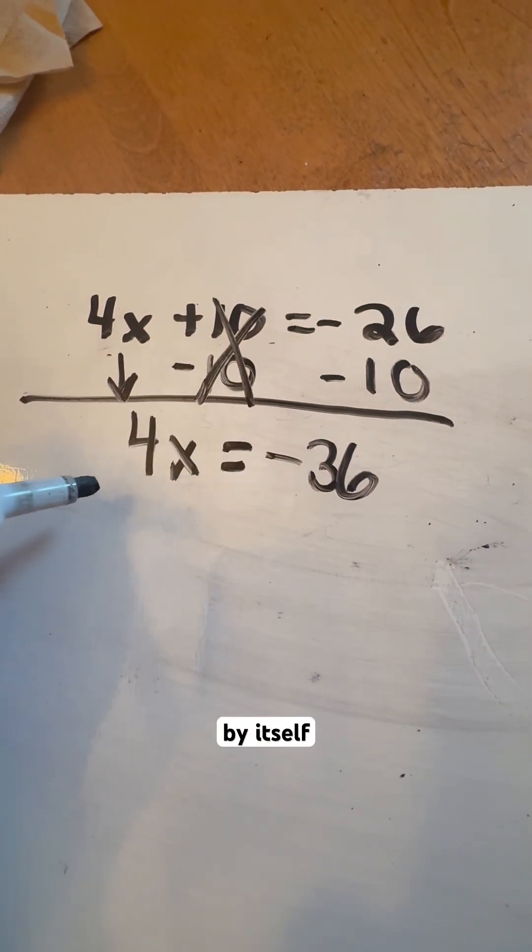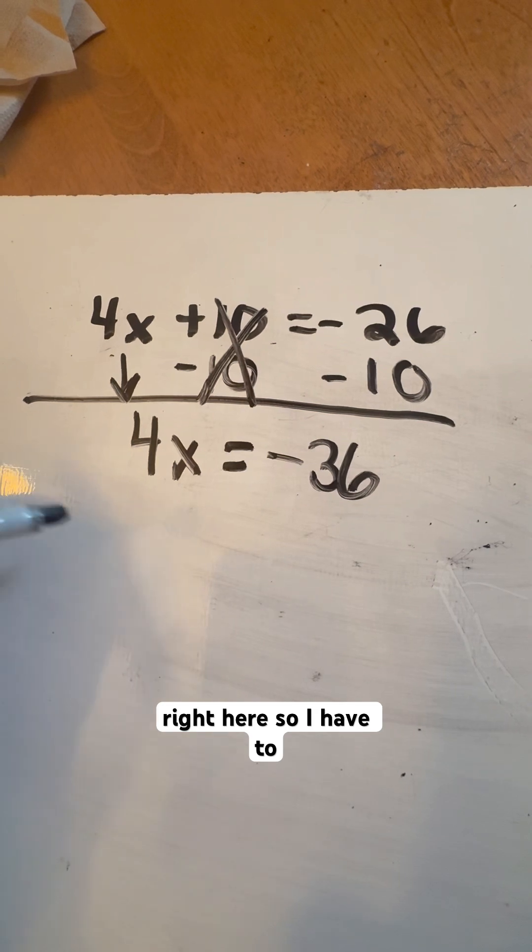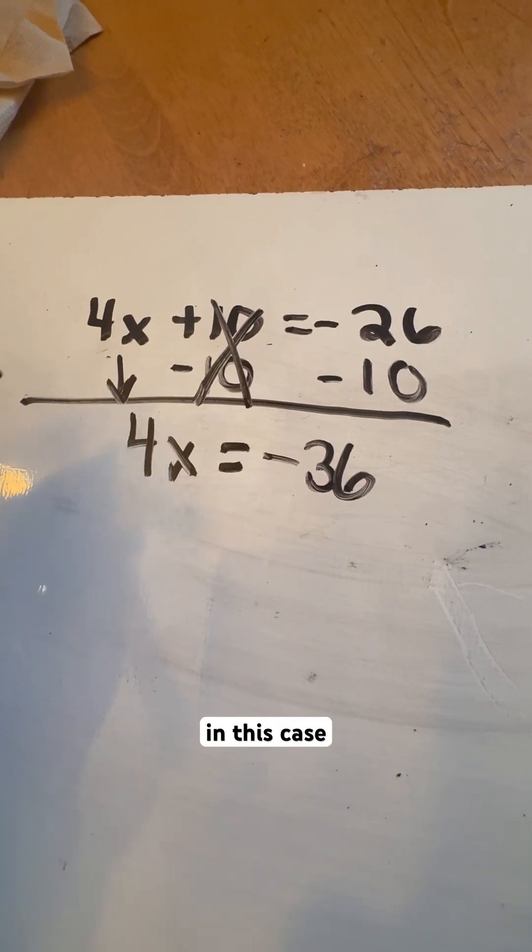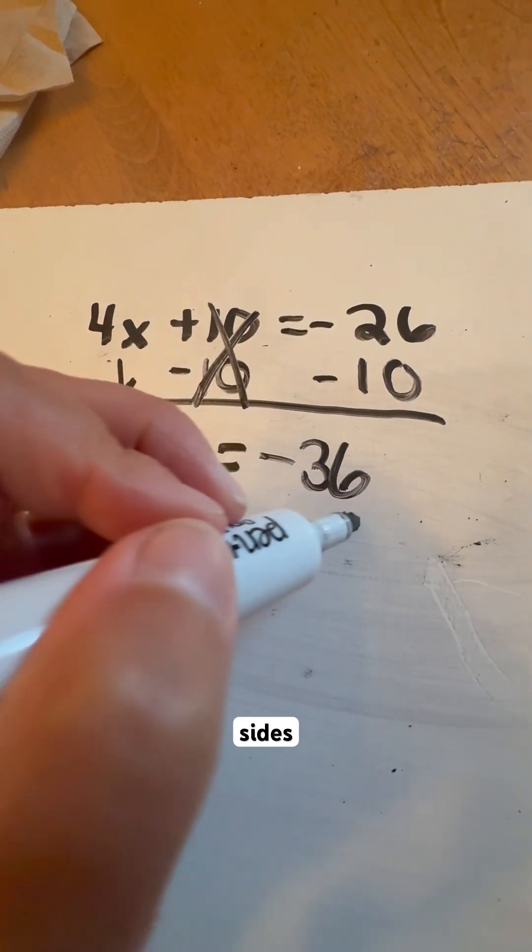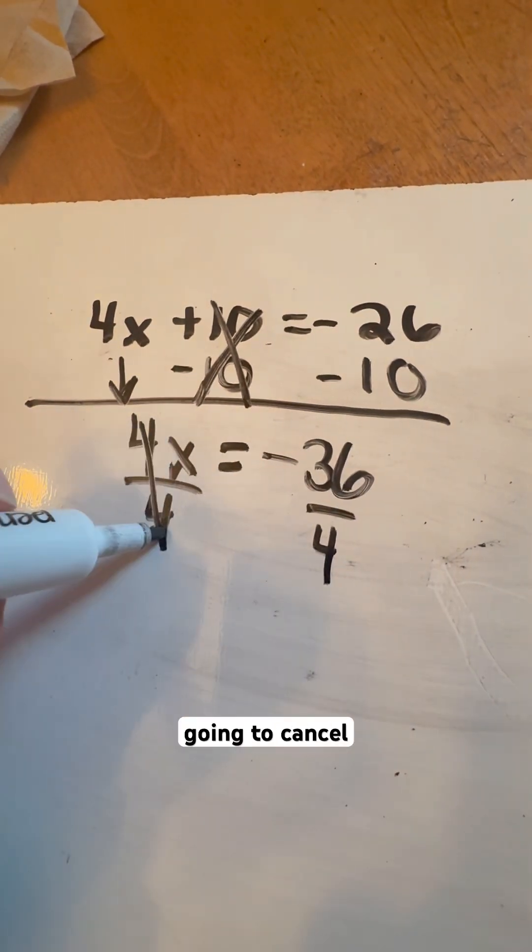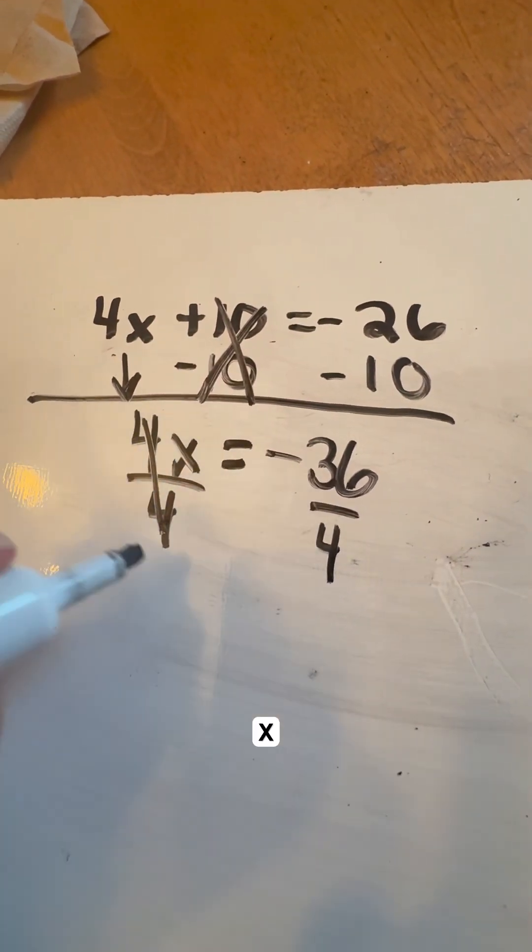Now we want to get the x by itself. This is a multiplication right here. So I have to do the opposite operation in this case, which is to divide. So we're going to divide both sides by 4. That's going to cancel these out, leaving them with 1x right here.